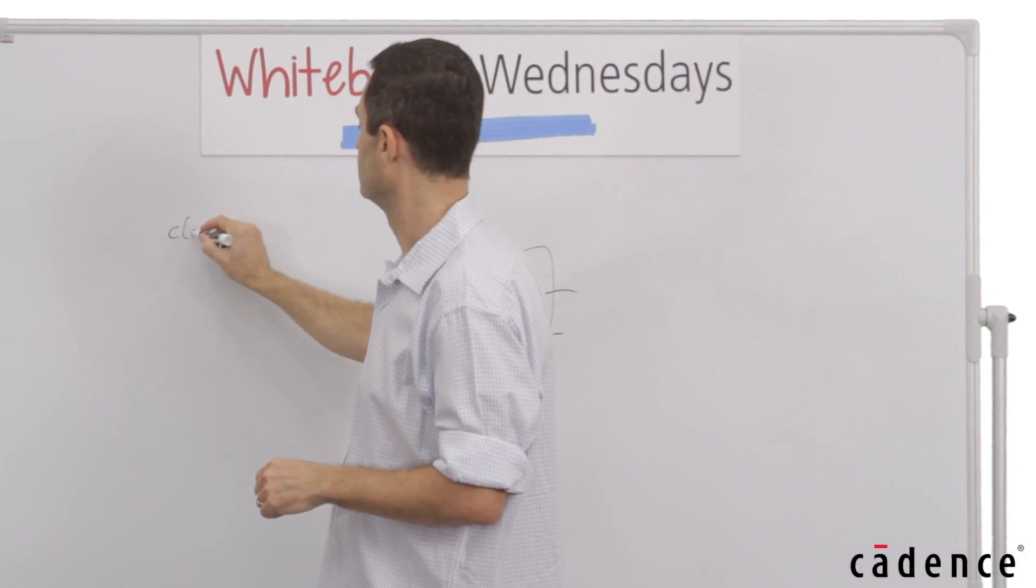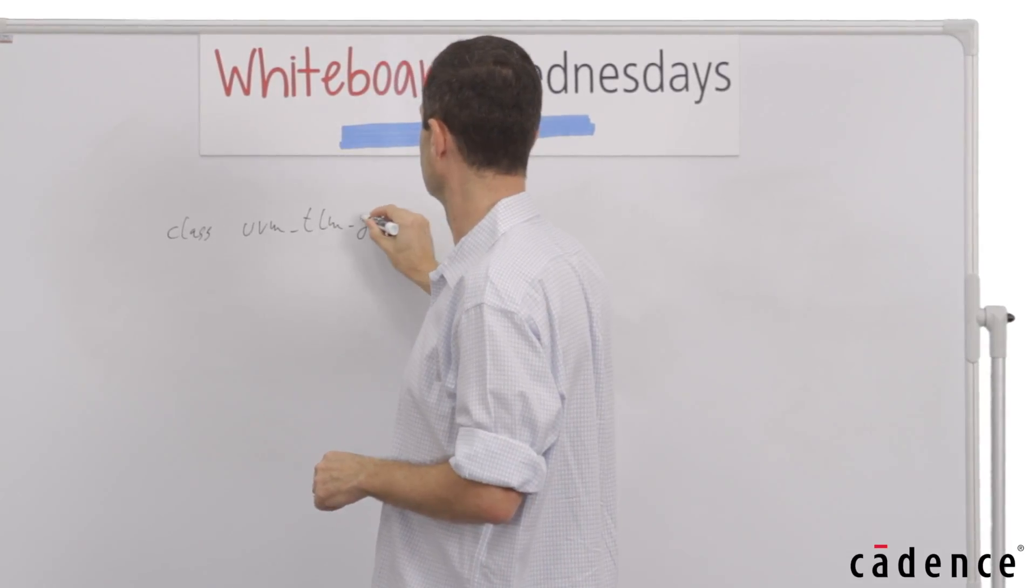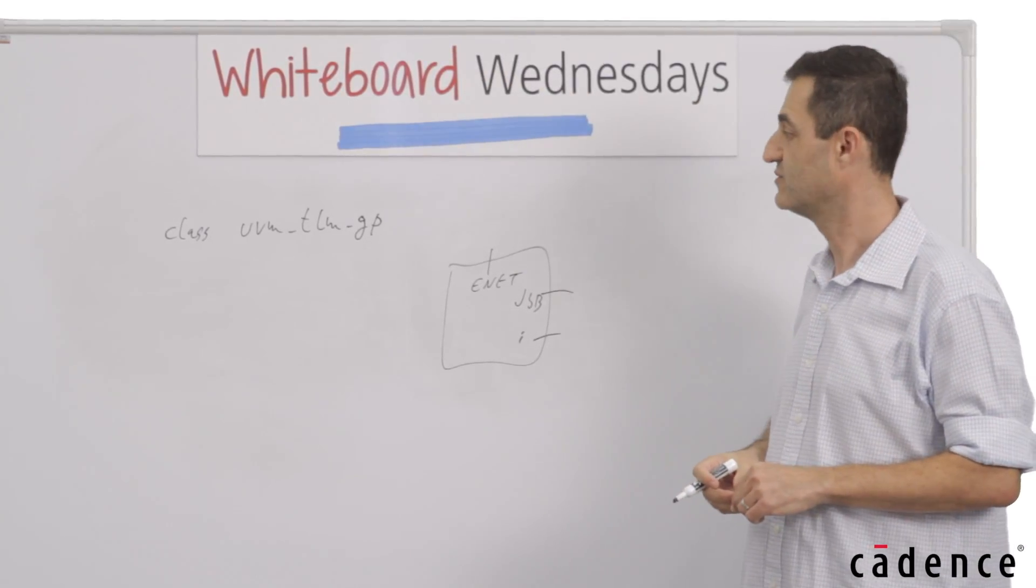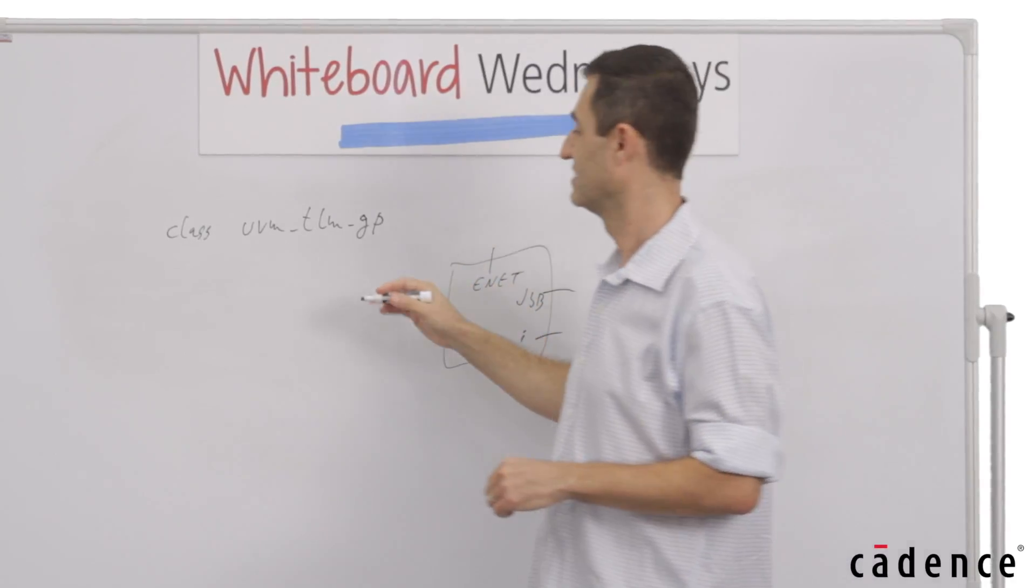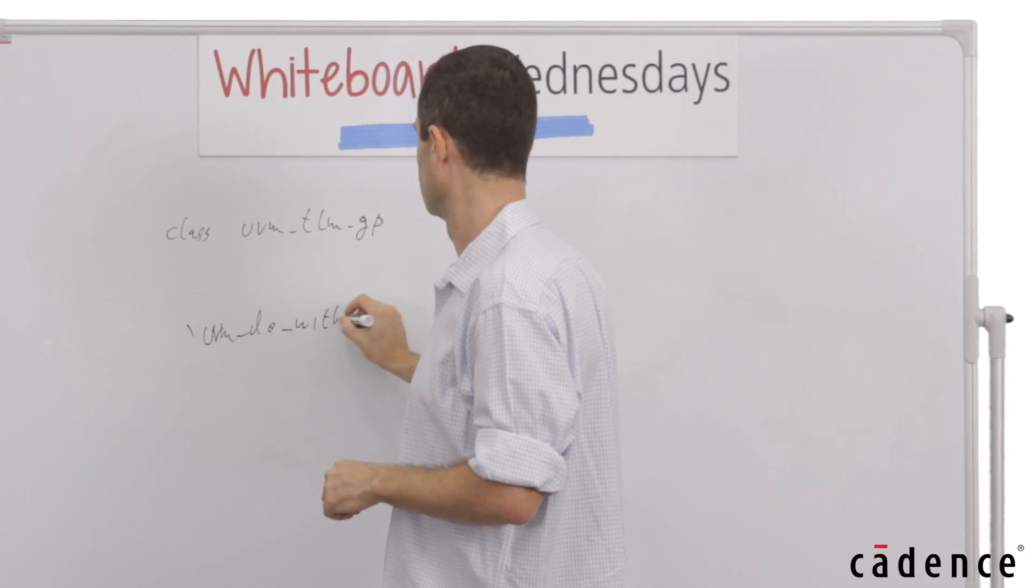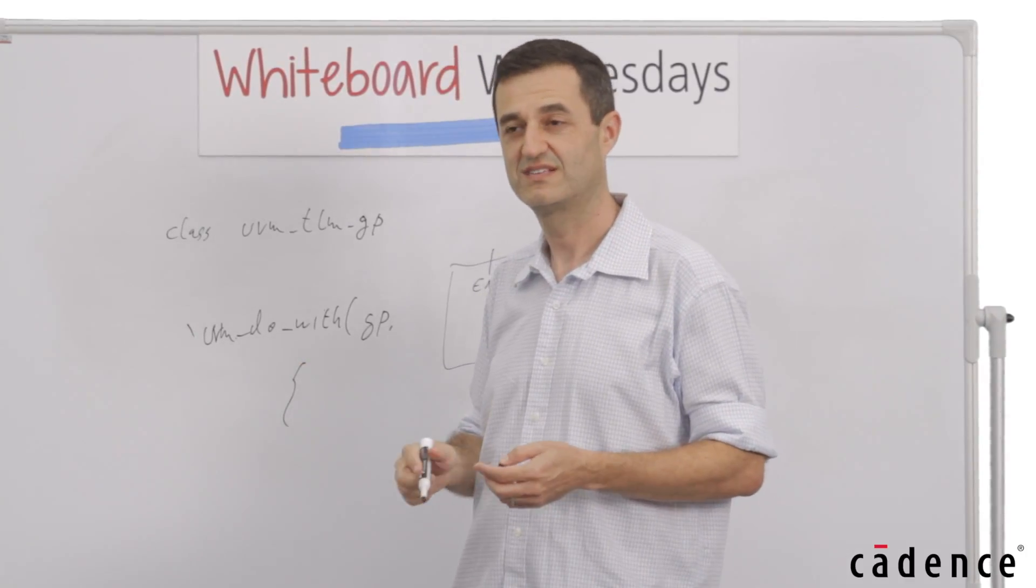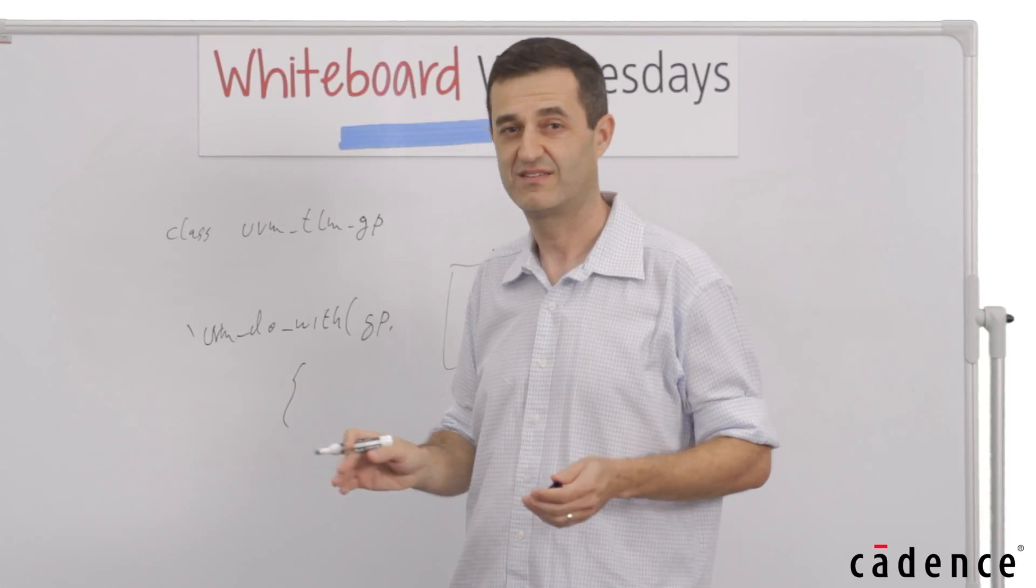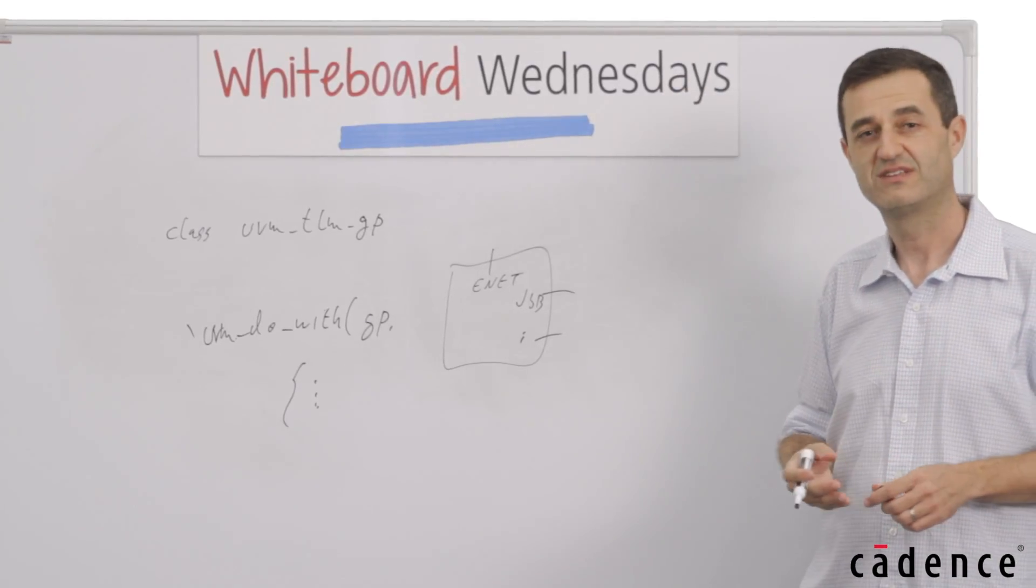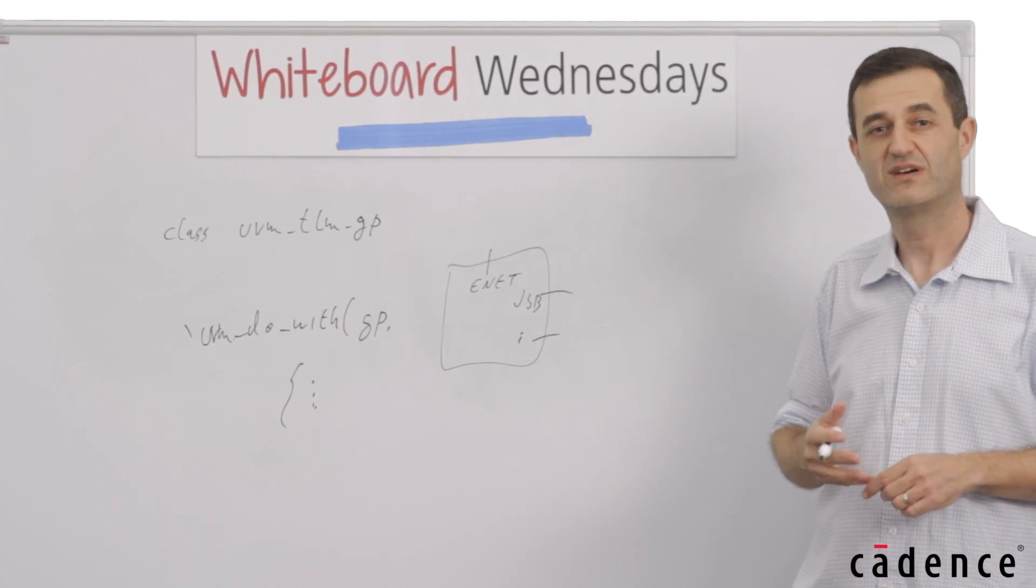So support for TLM2 defines a UVM TLM generic payload class which you can now use as your sequence item. So your sequences would actually look something like UVM do with generic payload with a bunch of constraints on its fields which are things like data, address and command. Nothing which is protocol specific. So you can have a library of such high level scenarios that focus on the payload you want to transfer through the system without caring about the protocol.